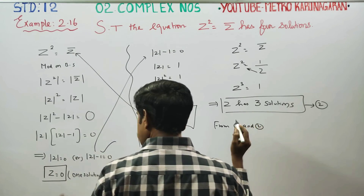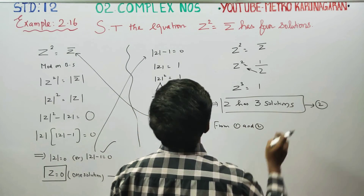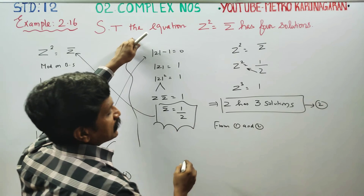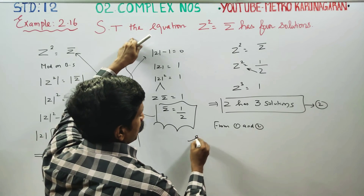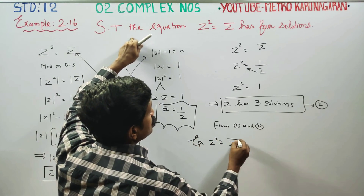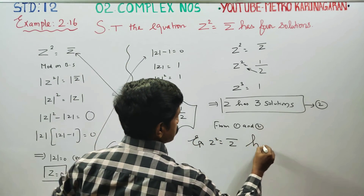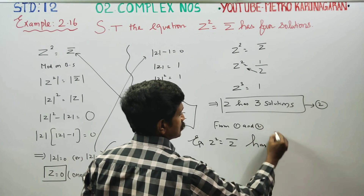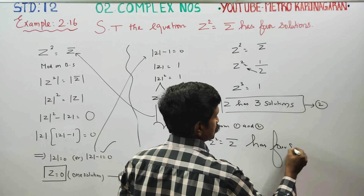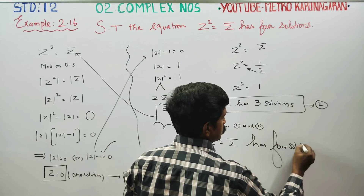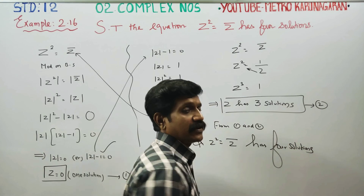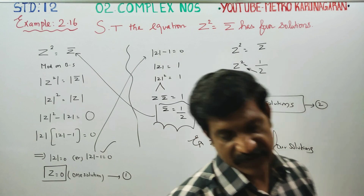From result number 1 and result number 2, you can conclude that the equation Z² equals Z-conjugate has four solutions. You can comfortably declare the answer.